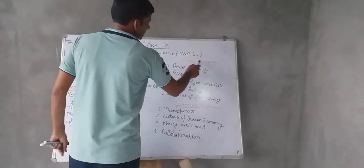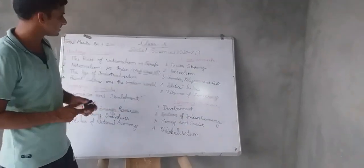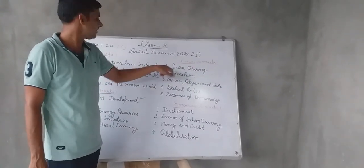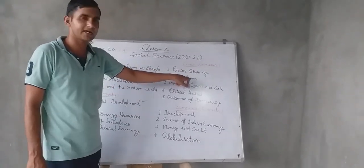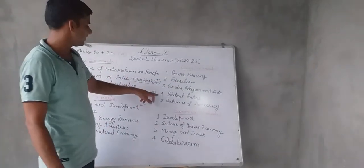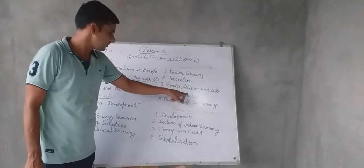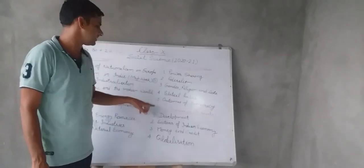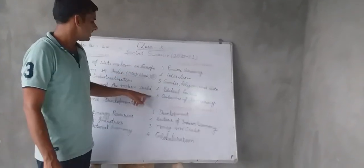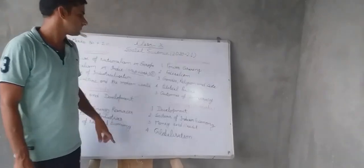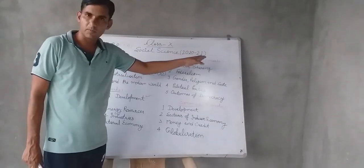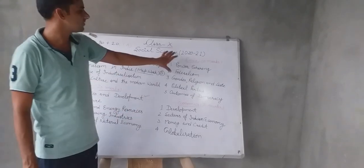Next is civics, which will also be of 20 marks, and there are five chapters. First, Power Sharing; second, Federalism; third, Gender, Religion and Caste — these we have already discussed. Fourth, Political Parties, which is the sixth chapter in your NCERT book. Fifth, Outcomes of Democracy. These five chapters we will discuss in civics. There will be no map work in civics, and it will be of 20 marks.